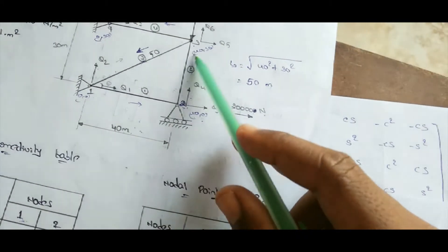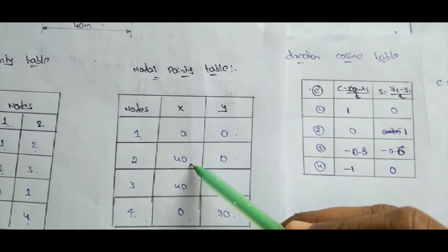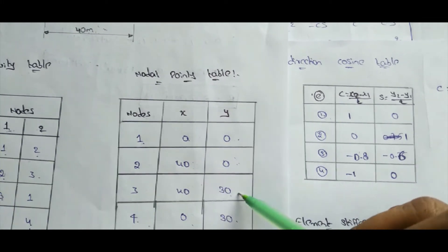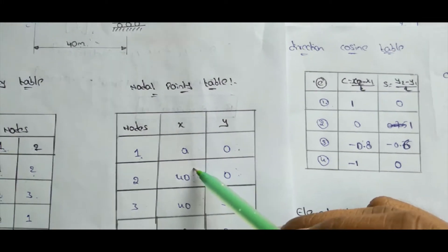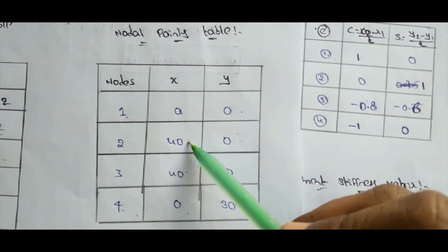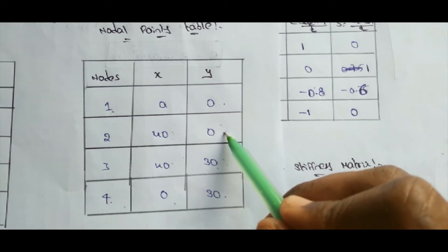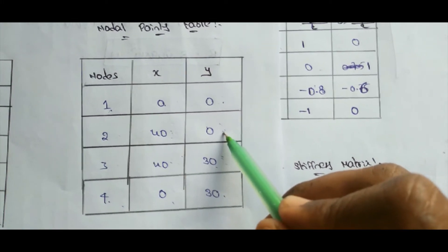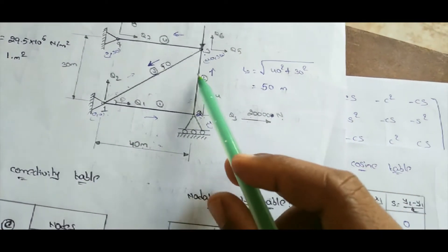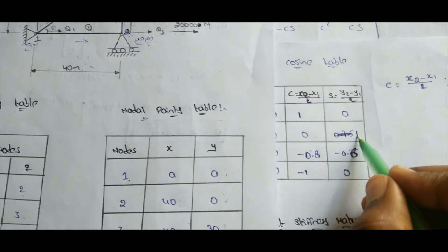For element 2, having nodes 2 and 3: x2 − x1 = 40 − 40 = 0, so C = 0. For S: y2 − y1 = 30 − 0 = 30, and the length of element 2 is 30 meters, so S = 30/30 = 1. Therefore C = 0, S = 1 for element 2.